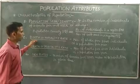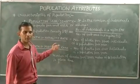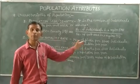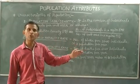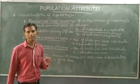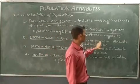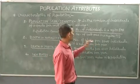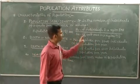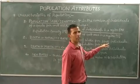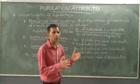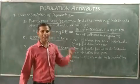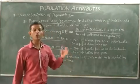Second is birth rate, also called natality rate. It is defined as the number of births per 1000 individuals of a population per year. That is, the number of new individuals born into the population — that is called birth rate or natality rate.